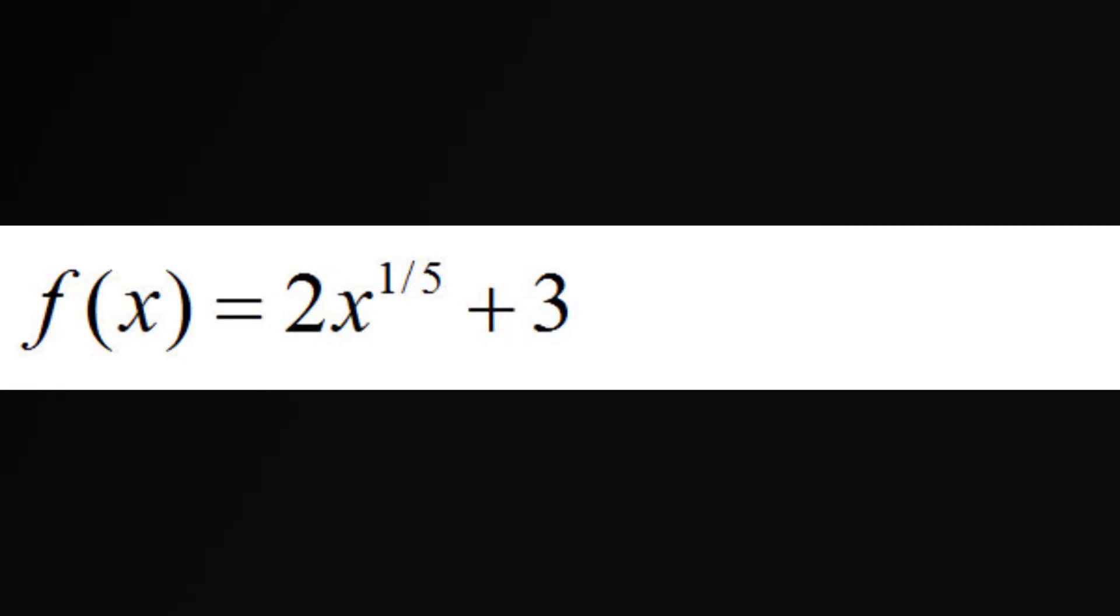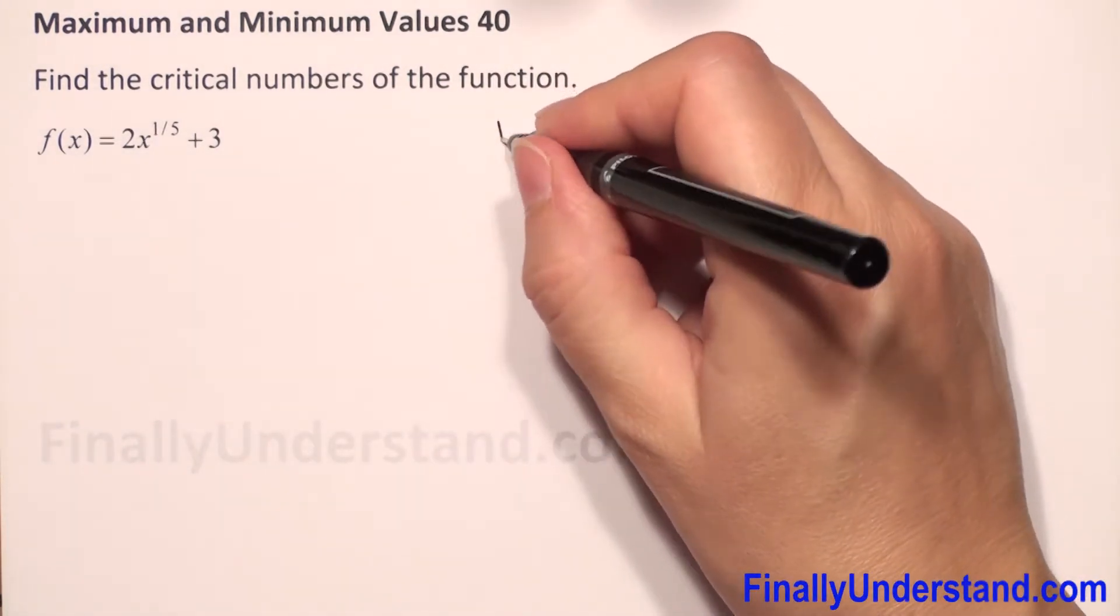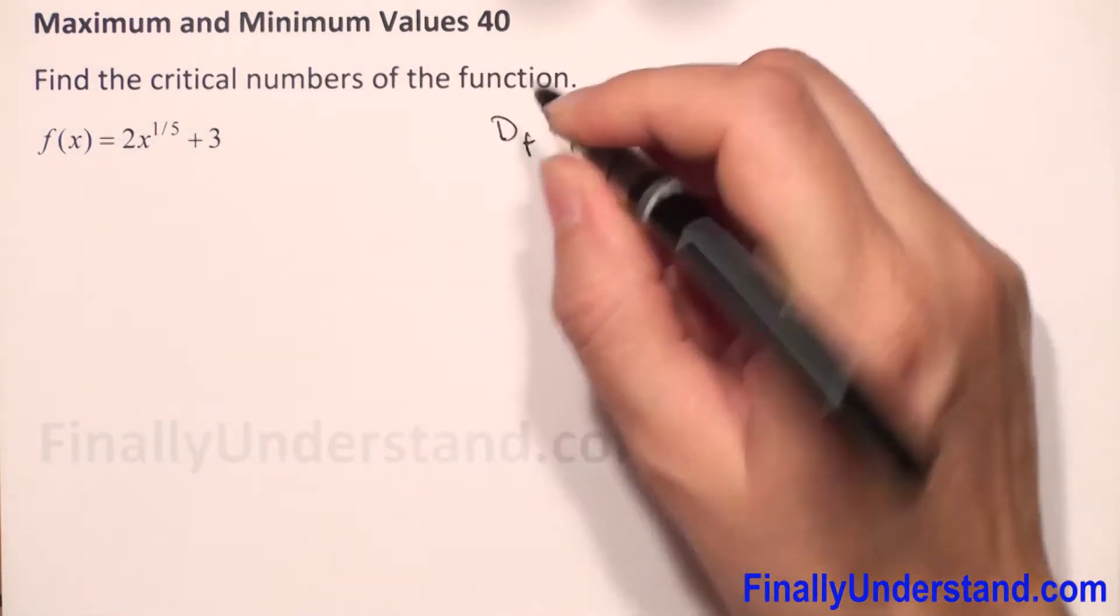We have to find the critical numbers. We know that a number is a critical number if this number belongs to the domain of our function and the first derivative of this function for this number is equal to zero, or the first derivative for this number does not exist. So first, we need the domain of our function f.